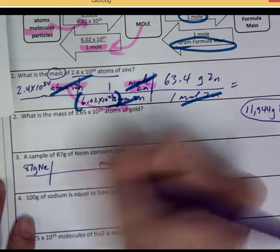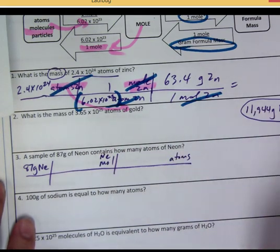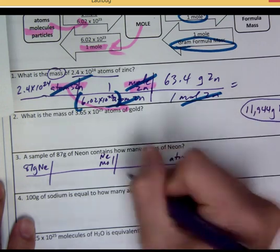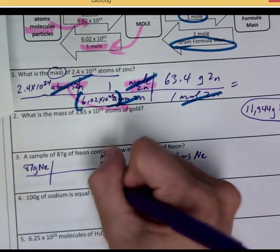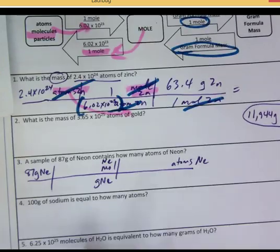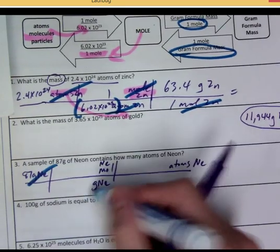And then grams of Neon, we need to go to moles of Neon. I'm going to write Neon above it. And we go to atoms of Neon. It's an element, so we go directly to atoms. Okay? So grams of Neon needs to go on the bottom because that's what we started with so that we can cancel it out. Right? We put it on the bottom so we can cancel it out.